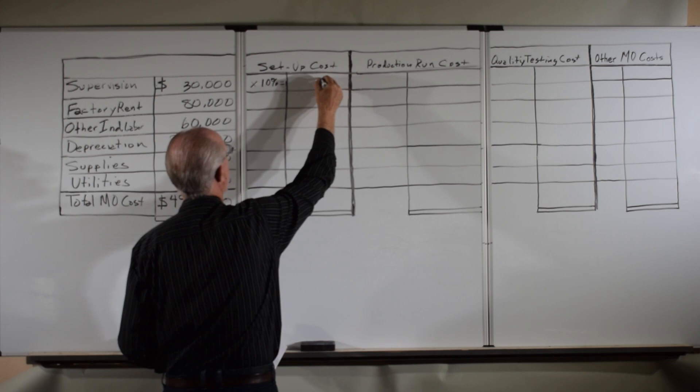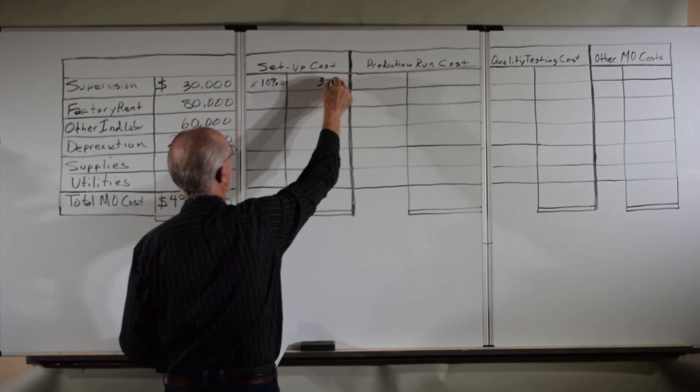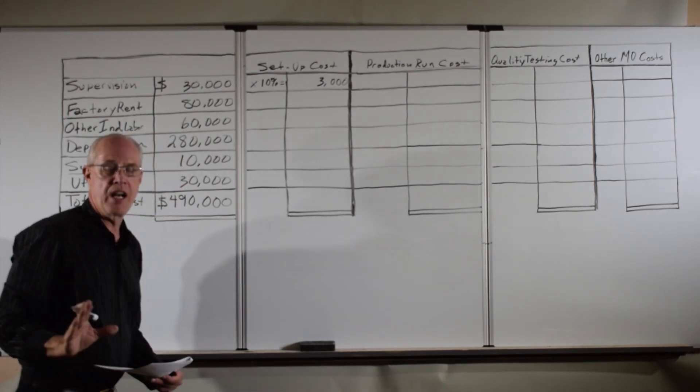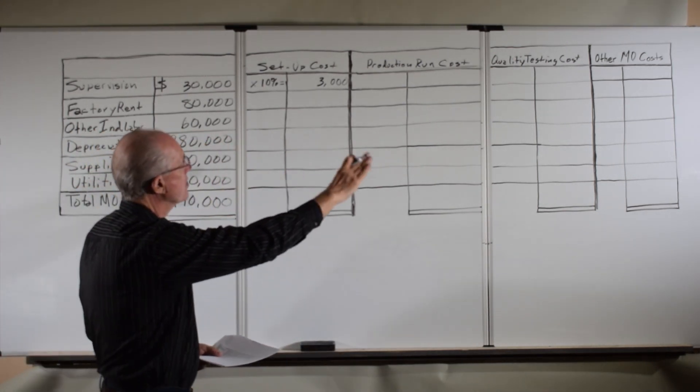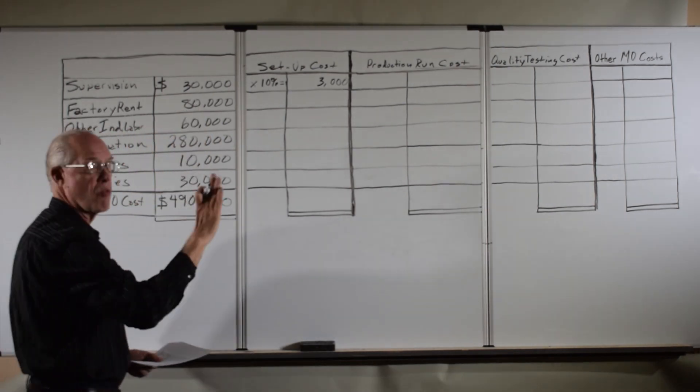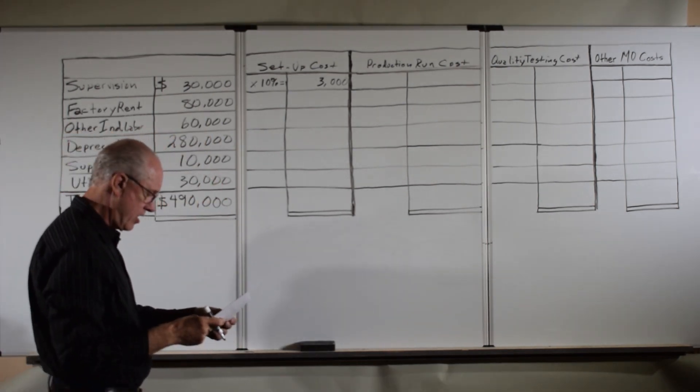Setup uses about 10% of supervisory cost. So supervision times 10% means the amount of supervision attributable to setup cost would be $3,000. We've got the percentages for all of these different activities in the factory and for each of the costs.